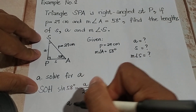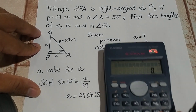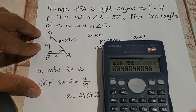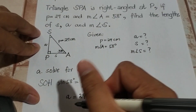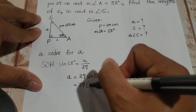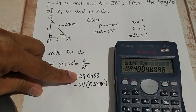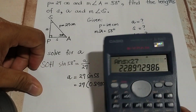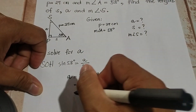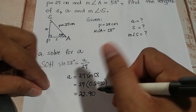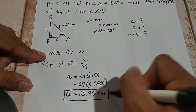Cross multiplying, A is equal to 27 times sine 58 degrees. Using the calculator, sine 58 equals 0.8480, so we have 27 times 0.8480, which gives us 22.89 — rounded up to 22.90. So side A is 22.90 centimeters.